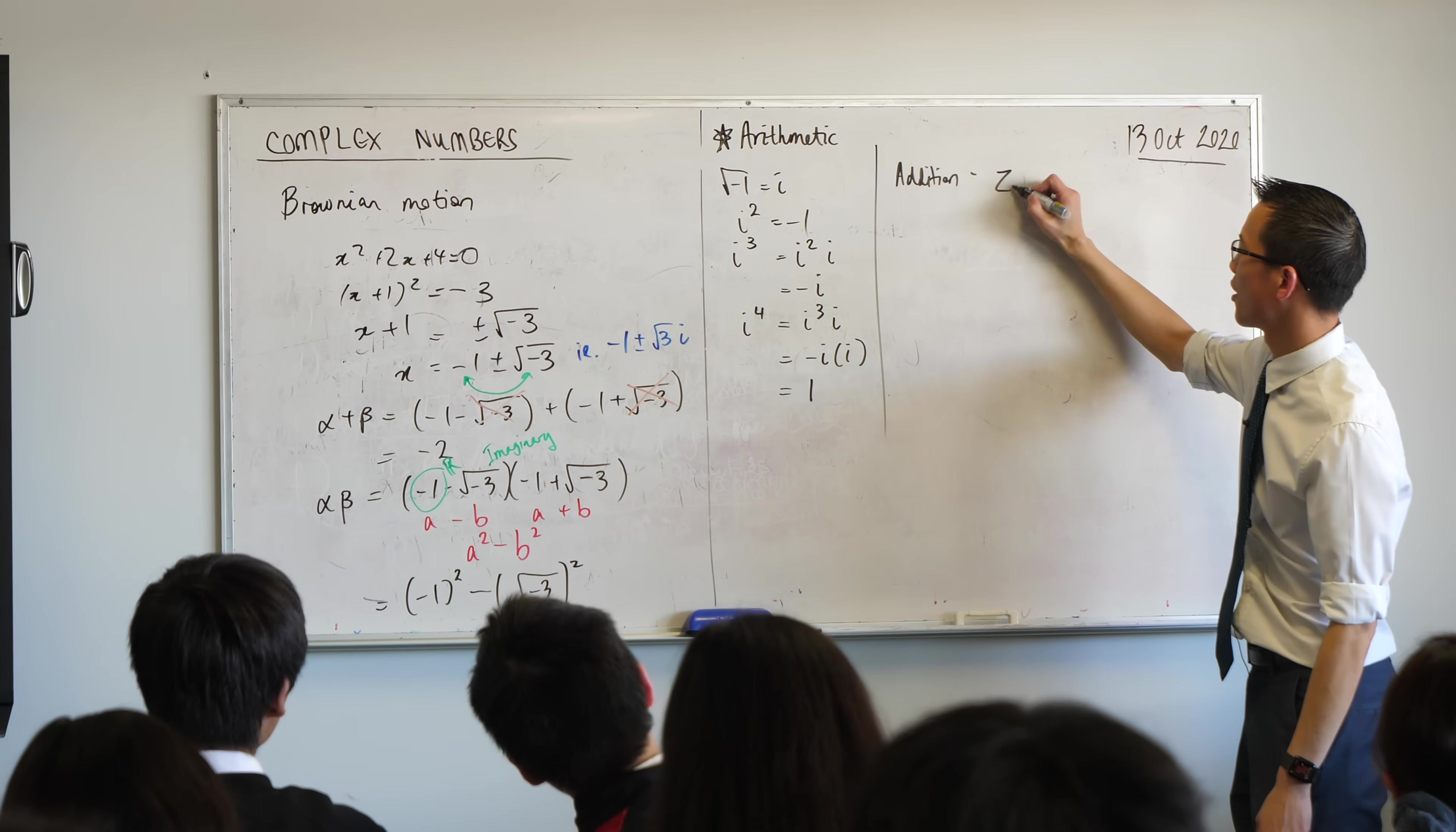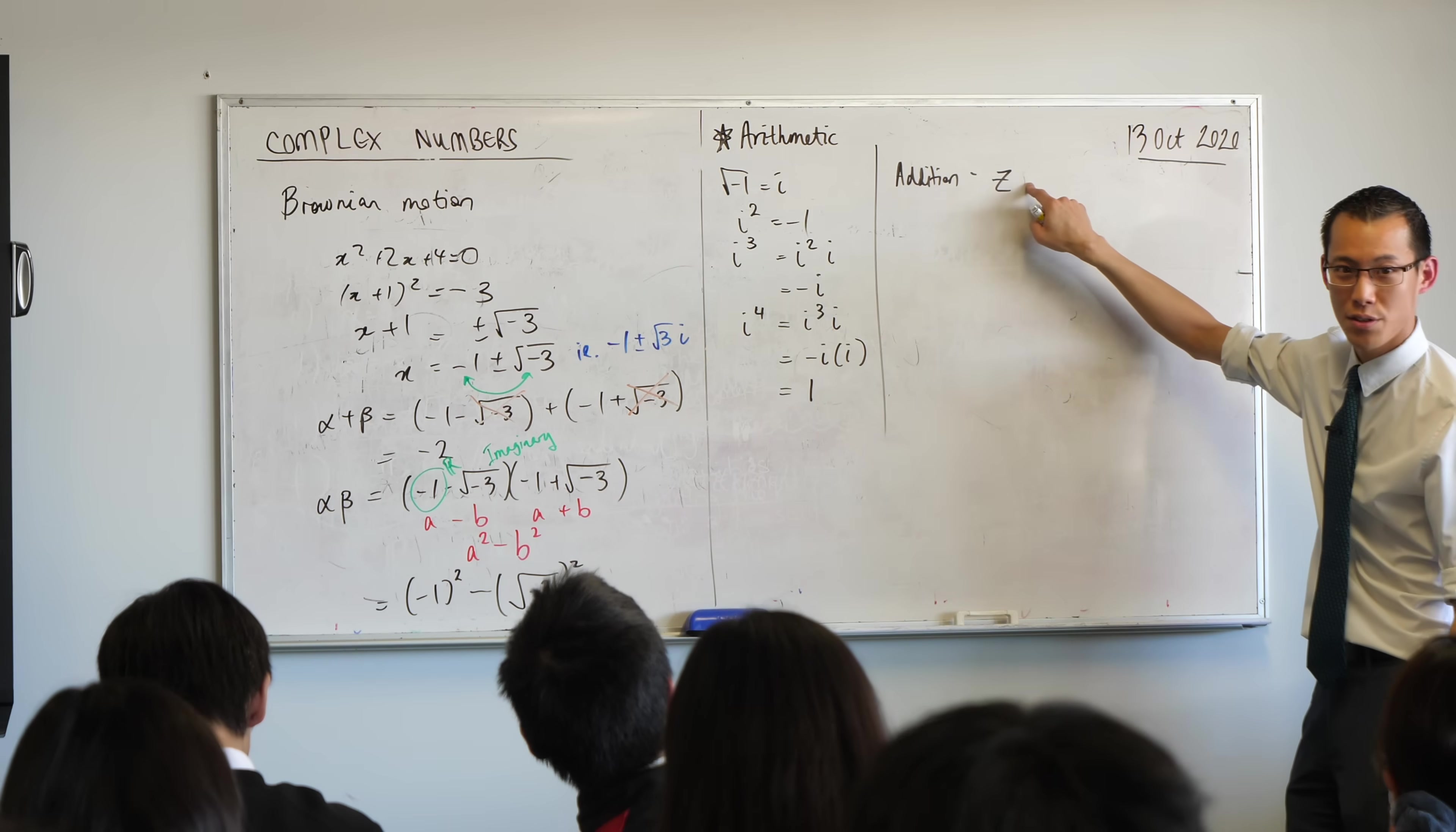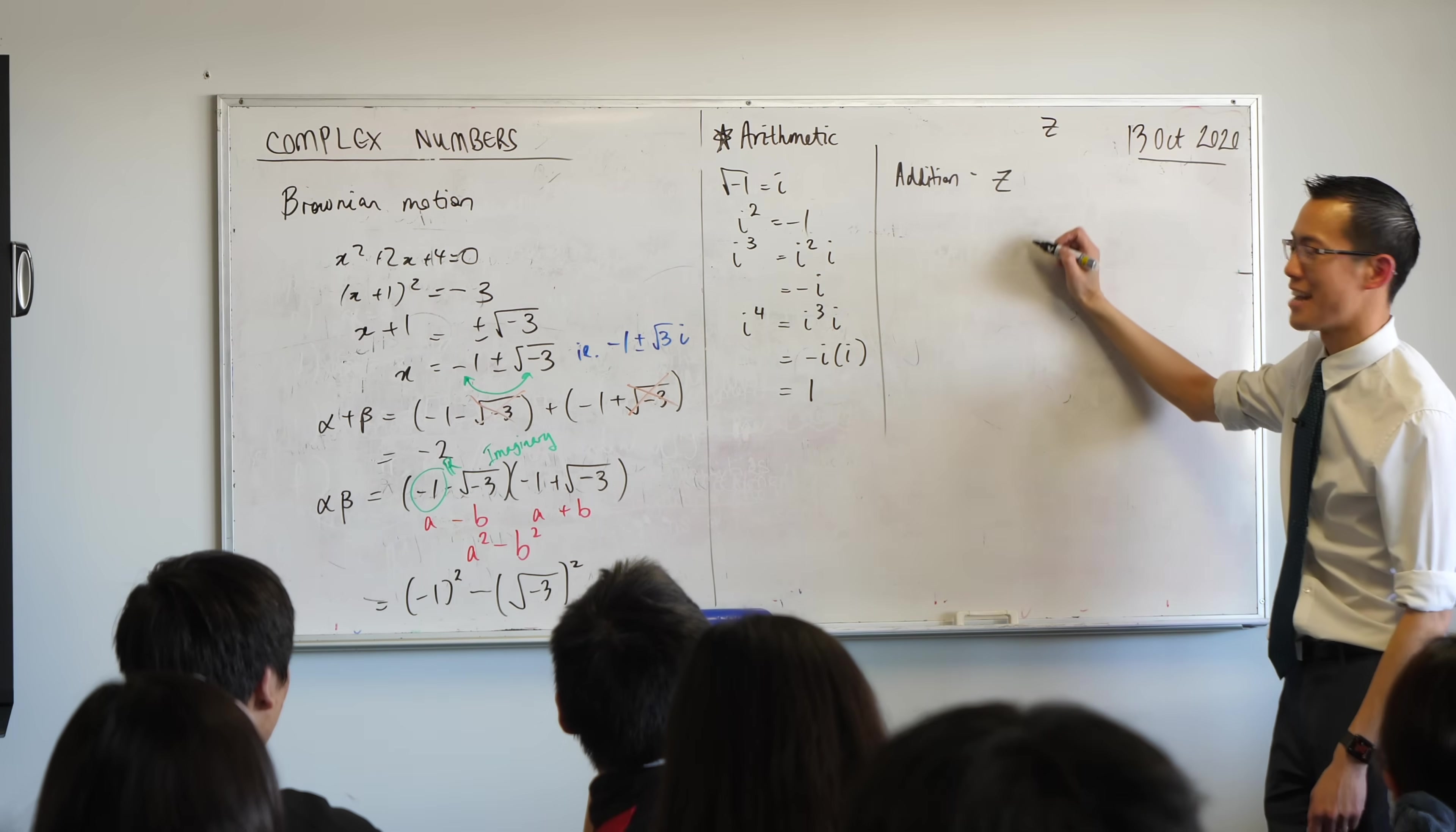if I've got a complex number z, by the way, z is our customary way of defining that we're talking about a complex number and not just a real number. I'm putting a dash through it because if you write a z fast and you write it a lot, it looks a heck of a lot like a two. So bad idea. Dash through it means a z.